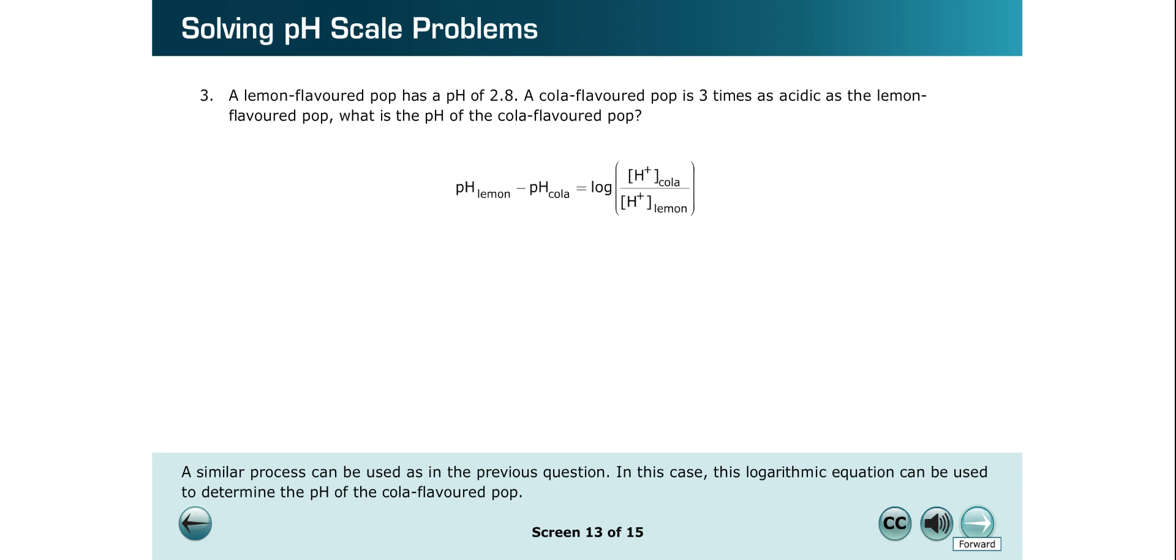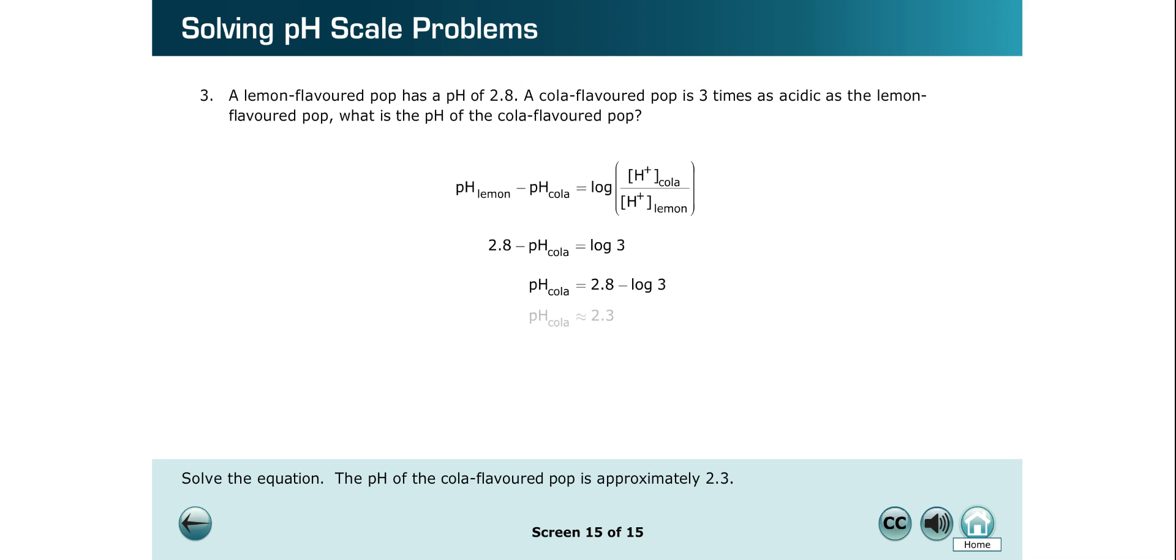A similar process can be used as in the previous question. In this case, this logarithmic equation can be used to determine the pH of the cola-flavored pop. The pH of the cola-flavored pop is 2.8 and the cola-flavored pop is three times as acidic as lemon-flavored pop. Substitute in these values into the equation. Solve the equation. The pH of the cola-flavored pop is approximately 2.3.